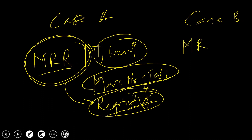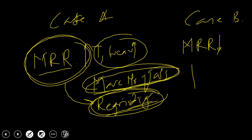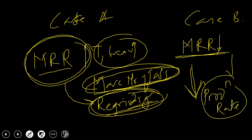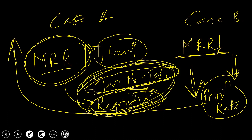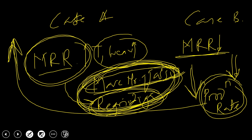Conversely, if we reduce the material removal rate, cutting tool replacement and regrinding frequency will fall. However, when you decrease the material removal rate, the production rate also falls. So we have two choices: increase the production rate and bear the higher tooling cost, or decrease the production rate to save that cost.